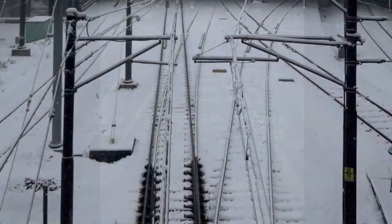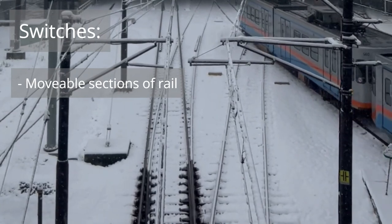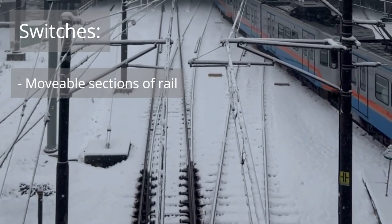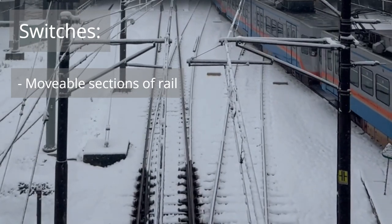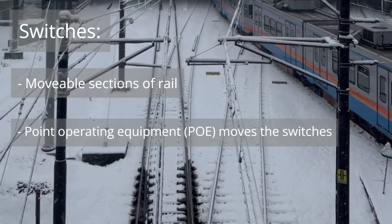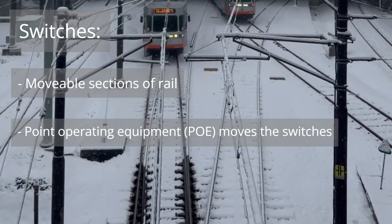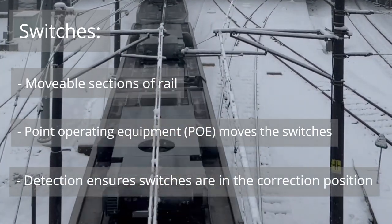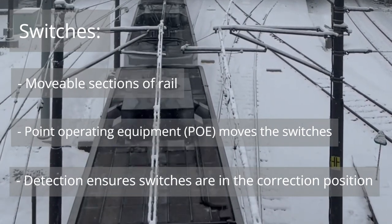Switches are the movable sections of rail that allow trains to be directed between two routes or tracks. Switches are a key area where signalling and track disciplines meet. Signalling equipment called points operating equipment, or POE, is used to move the switches. Other equipment, known as detection, is used to ensure that the switches are fully closed in either position. This is key to avoid trains derailing when traveling over sets of switches.